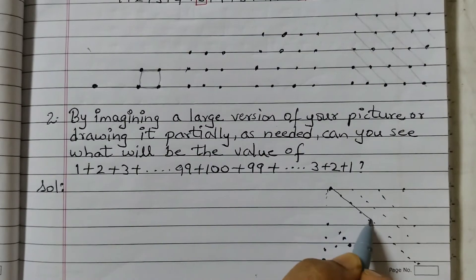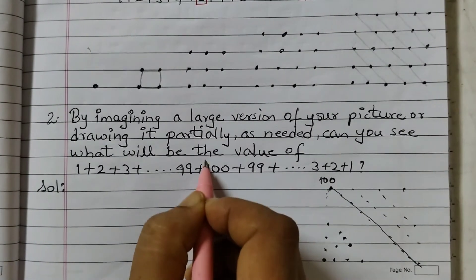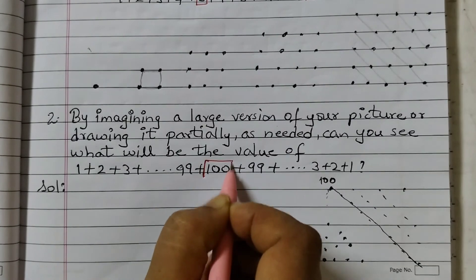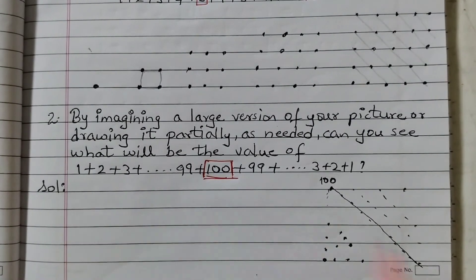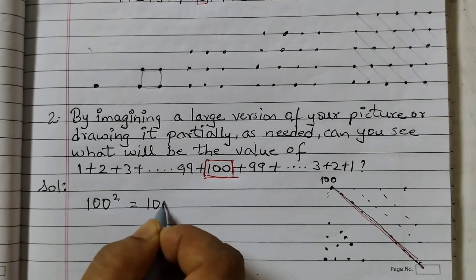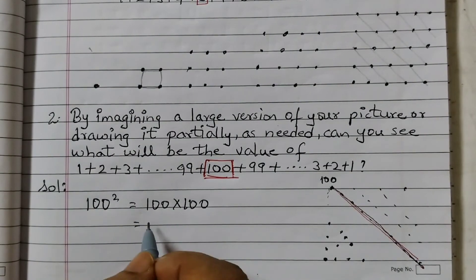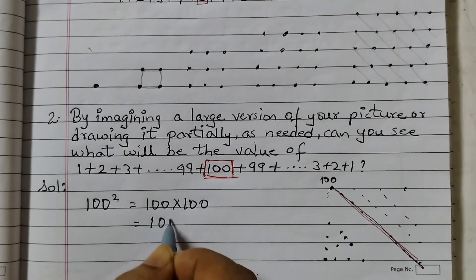The thing is that the diagonal will have 100 dots. 100 is in the middle of this number sequence. Answer would be 100 squared which is 100 into 100 and that equals to 1 into 1 is 1 and then 4 zeros.